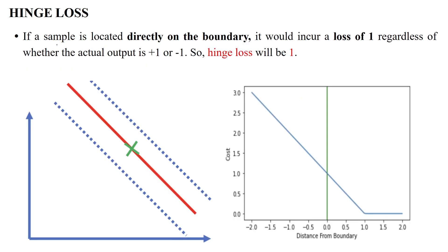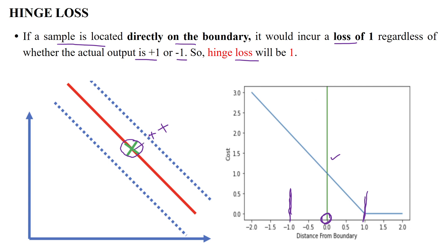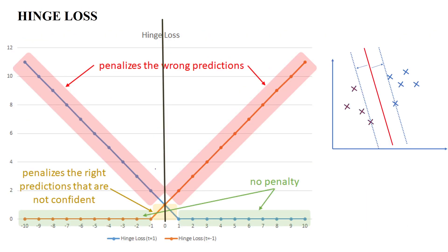If the sample is located directly on the decision boundary, it also incurs a loss of one, regardless of whether the actual output is positive or negative. The data point placed on the decision boundary always has a hinge loss of 1. Since the positive class data should be at least at the marginal line, the distance from the decision boundary to the marginal line is 1, which is the hinge loss incurred in this case in soft margin SVM.